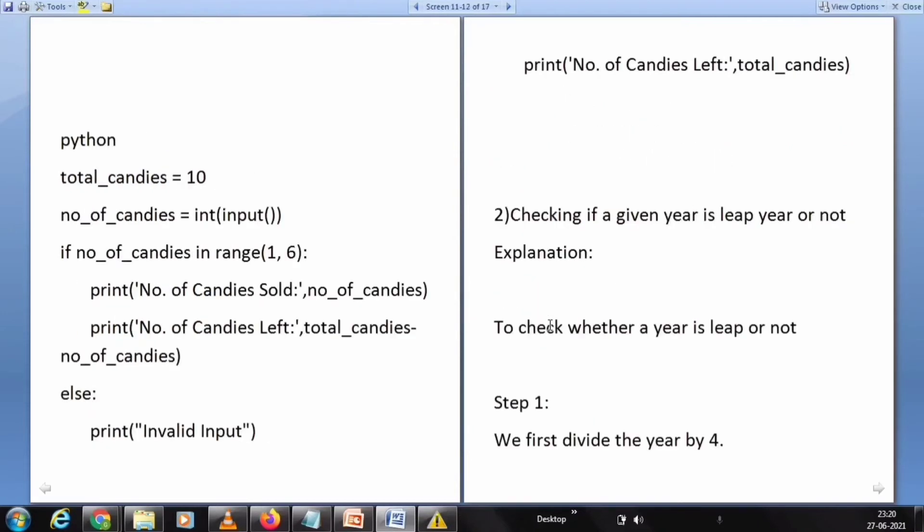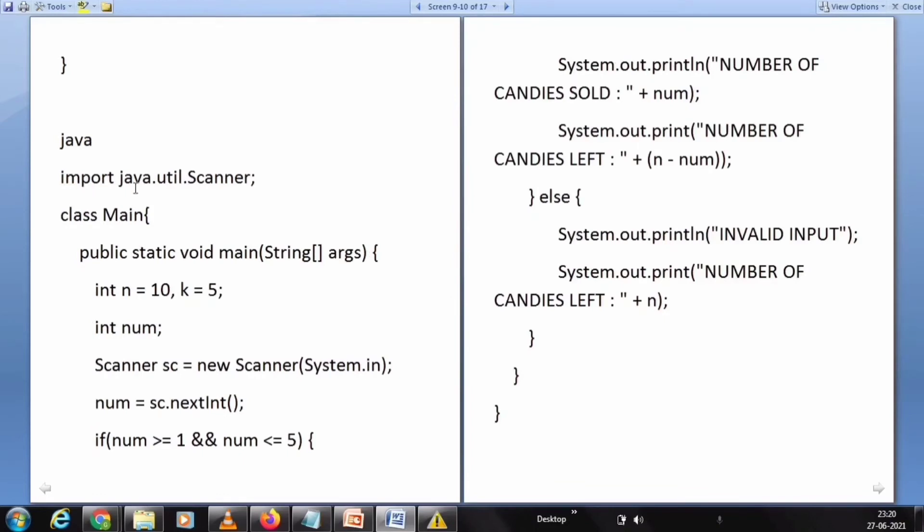We can write this same program in Java also. Import java.util.scanner as the header. Class main, in the main class: public static void main string args. Int n equals 10, k equals 5. Int number. Scanner sc equals new scanner system.in. Number equals sc.nextInt. If number is greater than 1 and number is less than or equal to 10, then print the number of candies sold and print the number of candies left. Else, print invalid input and the number of candies left.